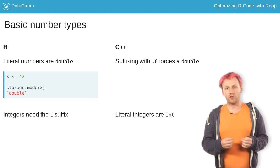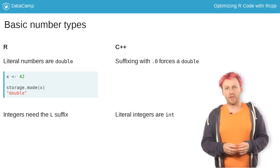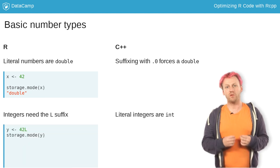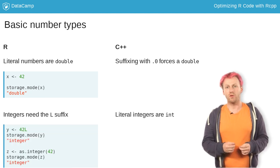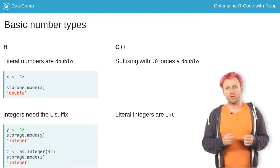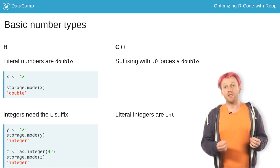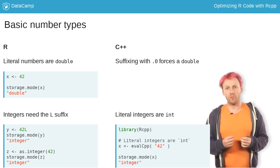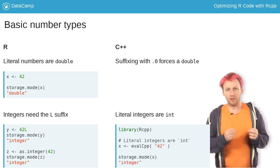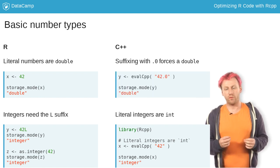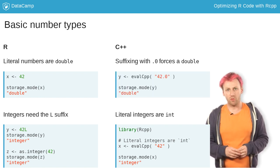In R, literal integer numbers are doubles by default, and you have to convert them explicitly to integers using either as.integer or with the capital L suffix. In C++, literal integer numbers are integers, and you can suffix them with .0 to force them to be a double.